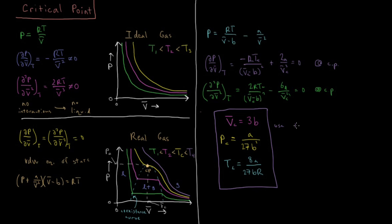A different equation of state would yield different values. But this is actually a way to parameterize the van der Waals equation of state: take the critical volume, pressure, and temperature — which are all experimentally determined properties — and then solve for the A and B parameters in terms of these values. So we can use experimental critical data to determine A and B for the van der Waals equation of state.